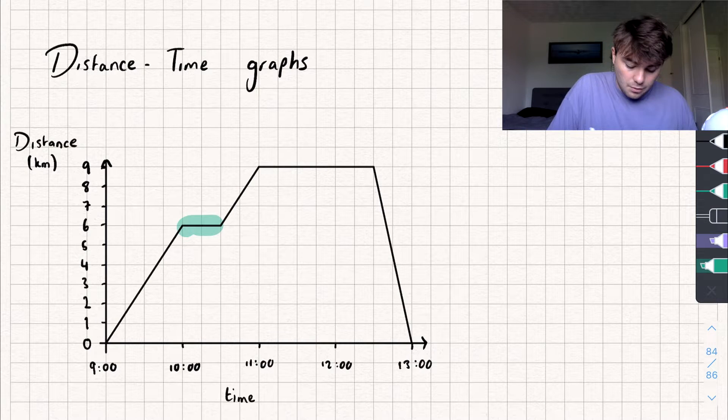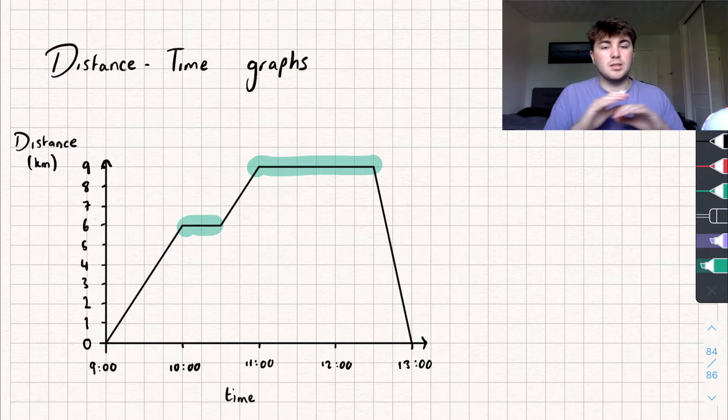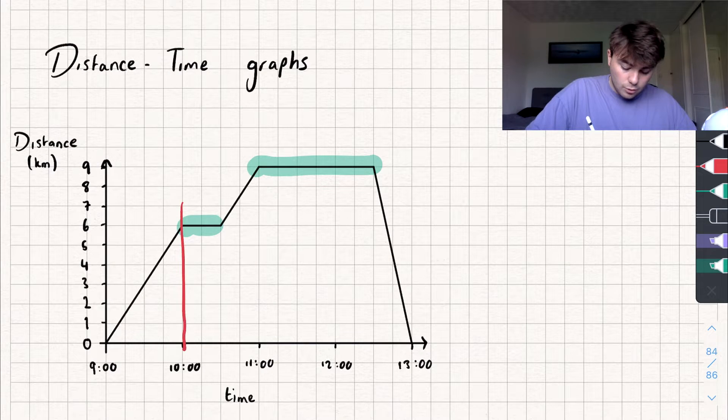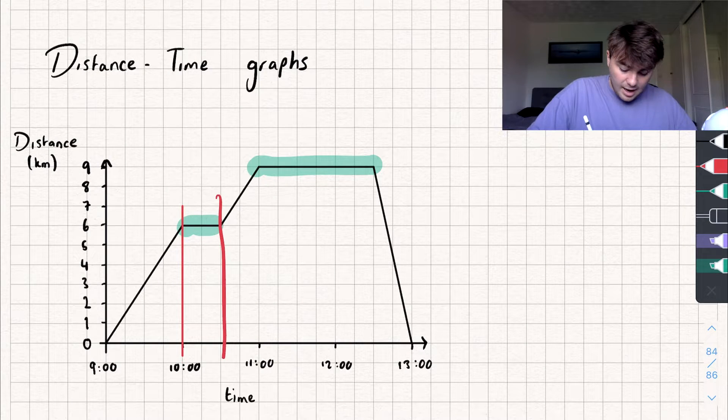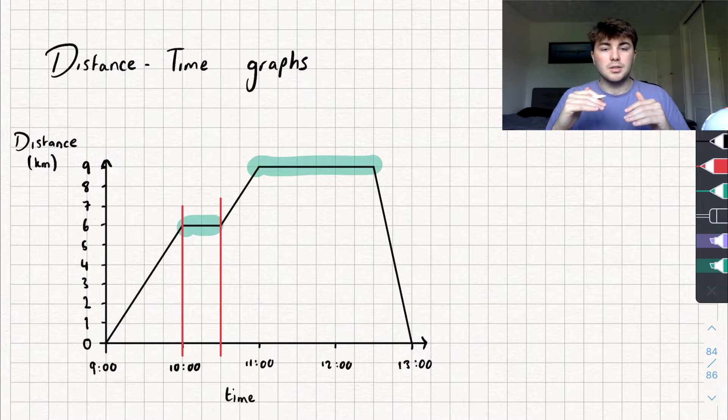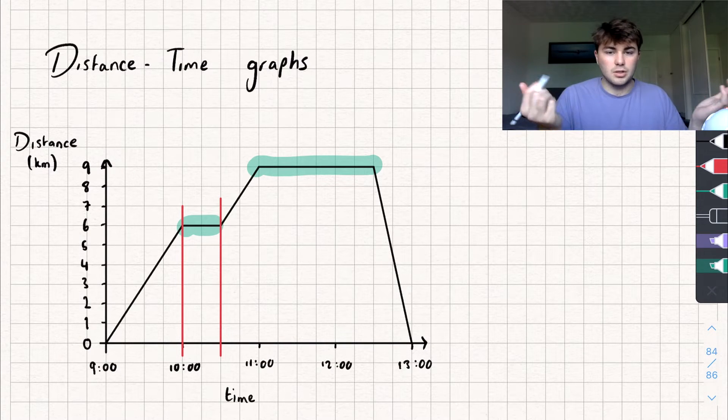If we've got a flat part of our graph, like this bit here and this bit here, that means I'm stationary, not moving. You can tell that because time is still passing. Between 10 and half past 10am, I've traveled 0 distance and maintained 6km away from where I started, so I must be standing still.